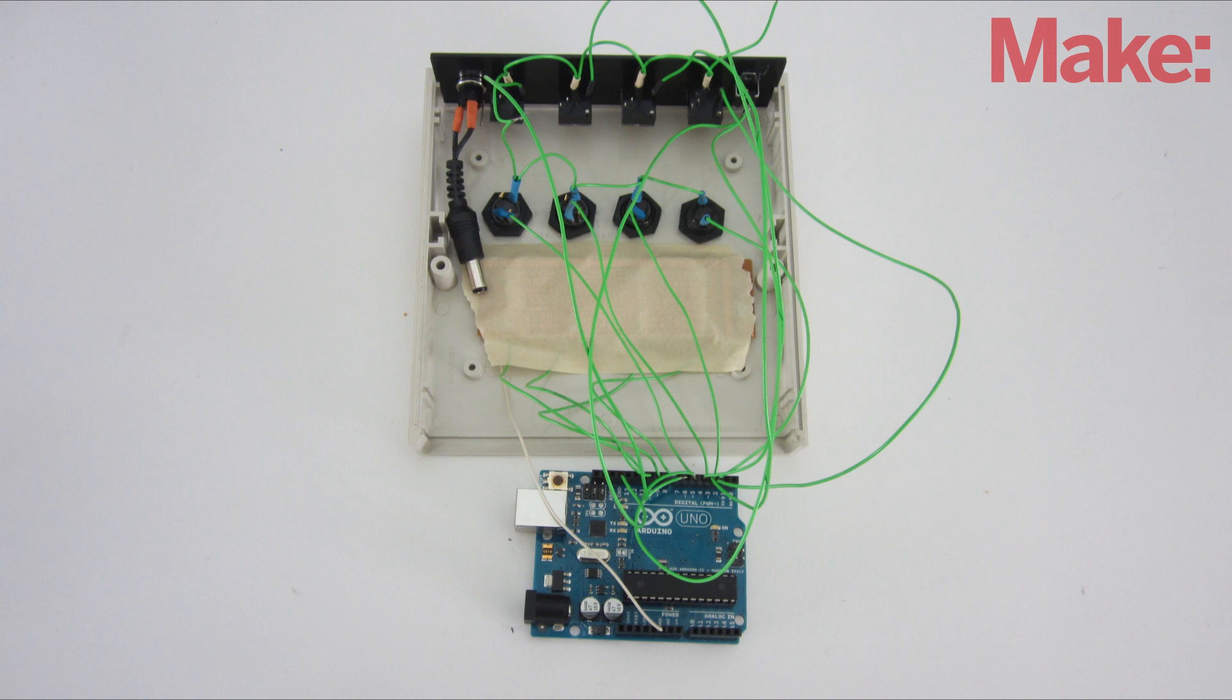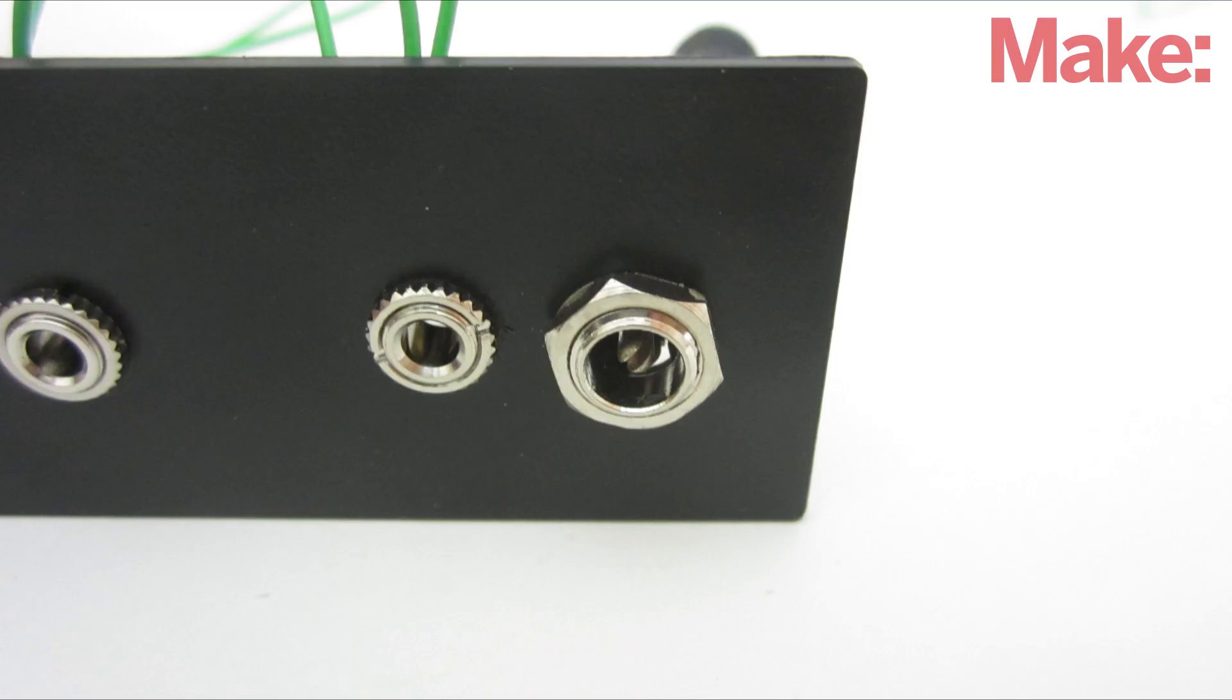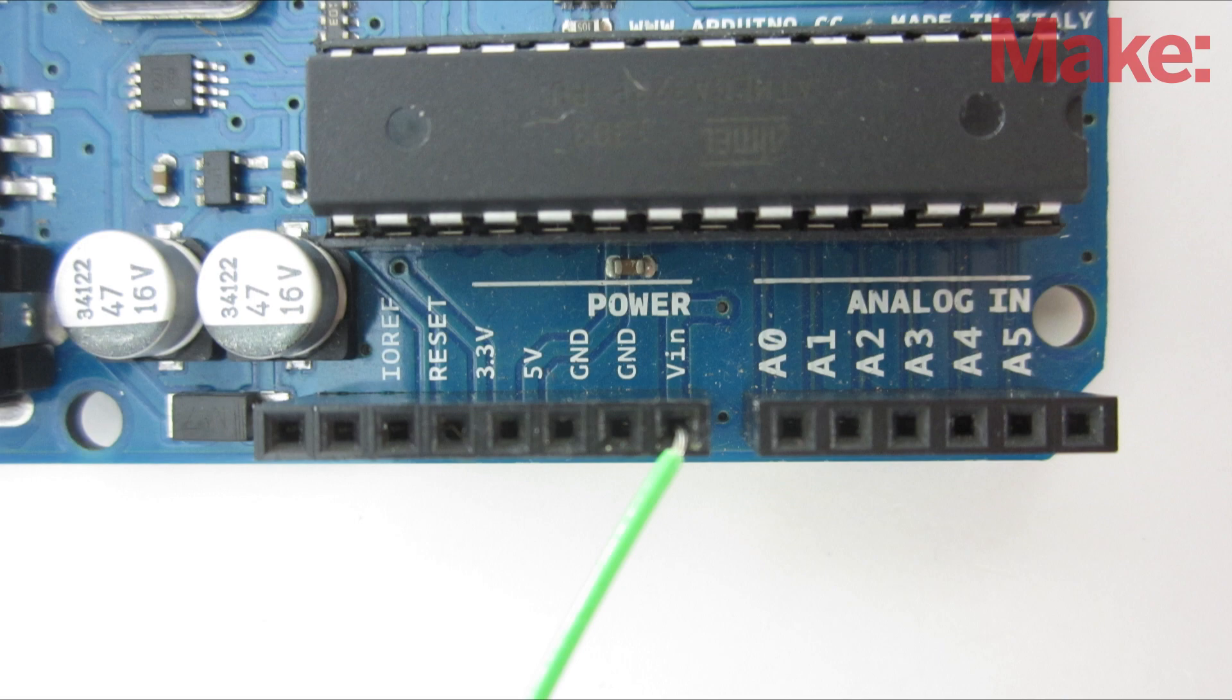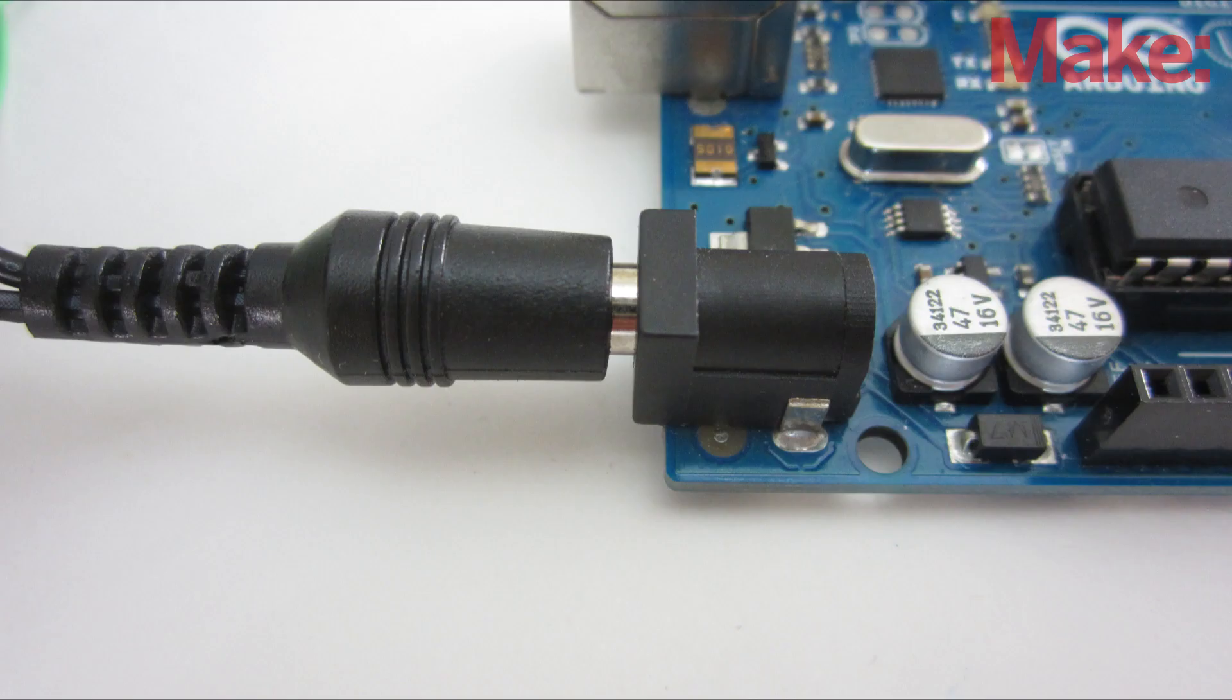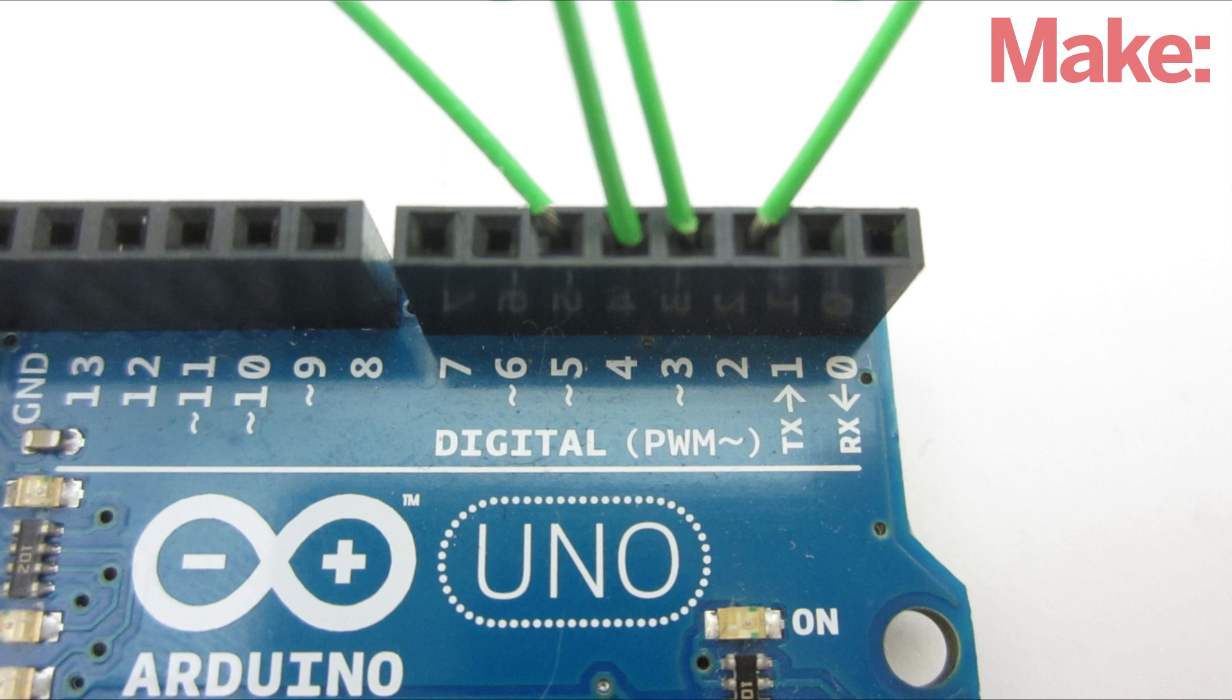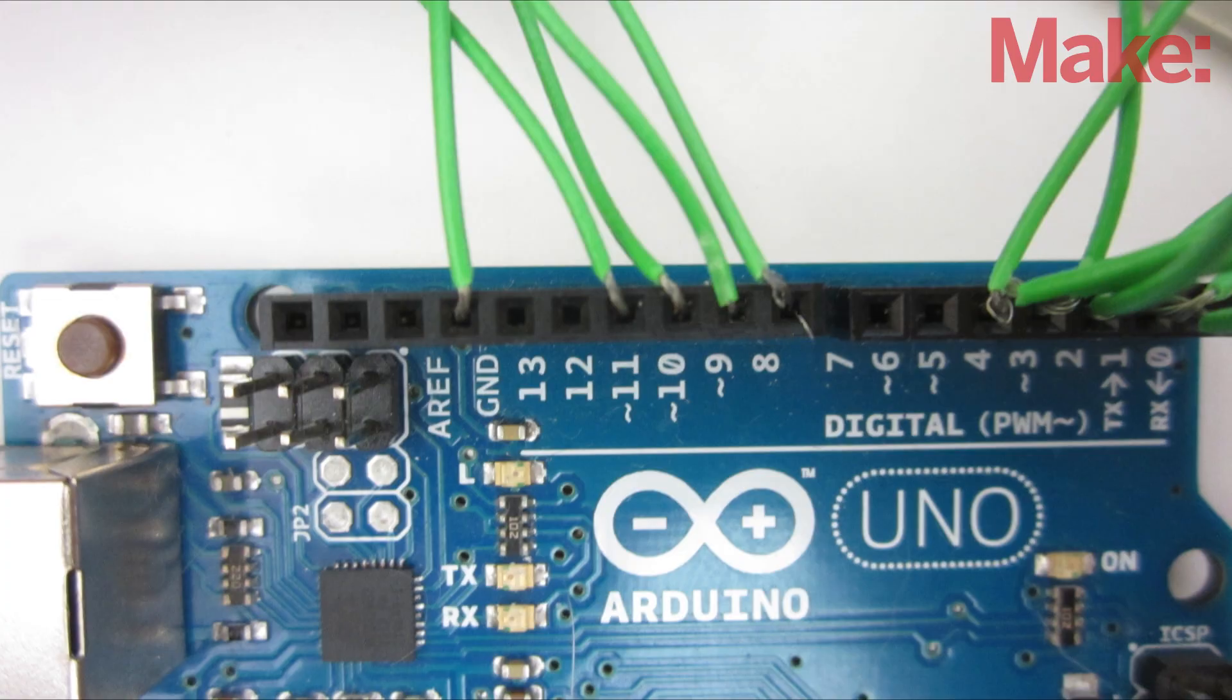Now it's time to hook everything up to the Arduino. The power connector can either be wired to the VIN pin, or you can add a male DC power connector and plug it into the power jack on the board. The buttons are connected to digital pins two through five on one side and ground on the other.